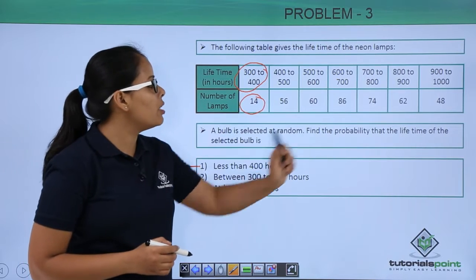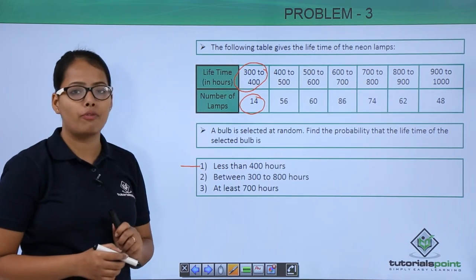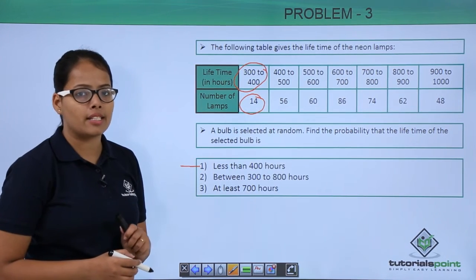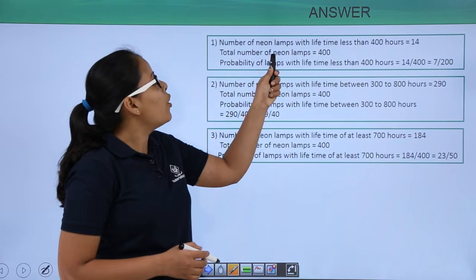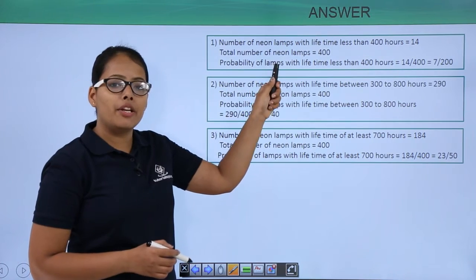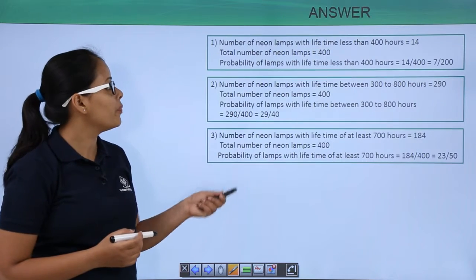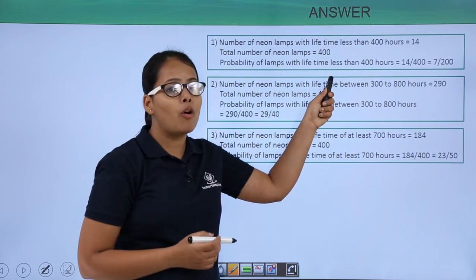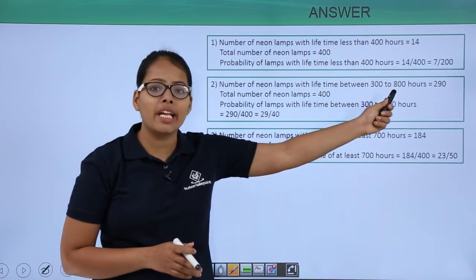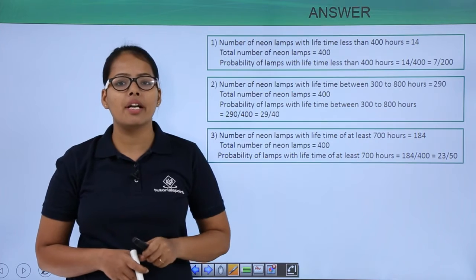The total number of bulbs is 14 plus 56 plus 60 plus 86 plus 74 plus 62 plus 48. When you sum all these values, you get a total of 400 lamps. The number of neon lamps with a lifetime less than 400 hours is 14. So the probability will be 14 divided by 400, which simplifies to 7 is to 200.